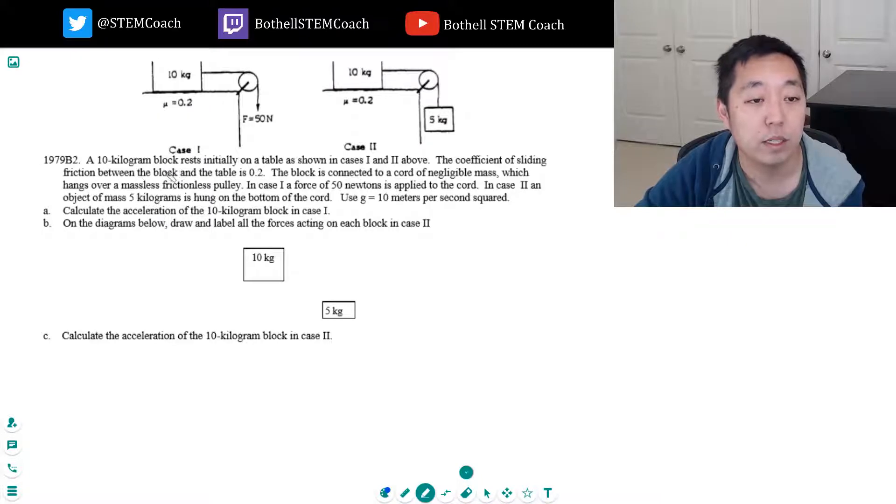A 10 kilogram block rests initially on the table as shown in cases 1 and 2 above. The coefficient of sliding friction between the block and the table is 0.2, we call this kinetic friction now. The block is connected to a cord of negligible mass which hangs over a massless frictionless pulley. In case 1 a force of 50 newtons is applied to the cord. In case 2 an object of mass 5 kilograms is hung at the bottom of the cord. Use g equals 10 meters per second squared.